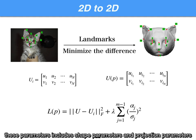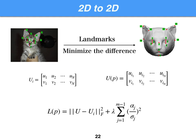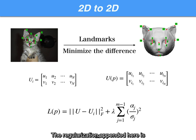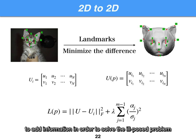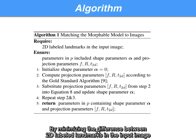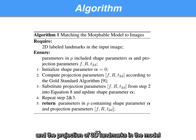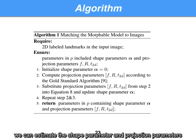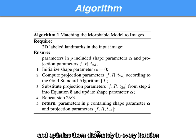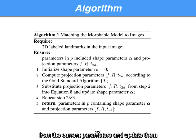We can then use objective functions to estimate parameters, including shape parameters and projection parameters. Fitting a 3D shape to an input image is an ill-posed problem. The regularization appended here adds information to solve the ill-posed problem and prevent overfitting. By minimizing the difference between 2D labeled landmarks in the input image and the projection of 3D landmarks in the model, we can estimate the shape and projection parameters. We first initialize the shape parameters and optimize them alternately in every iteration. In a loop, the algorithm generates a projection from the current parameters and updates them.